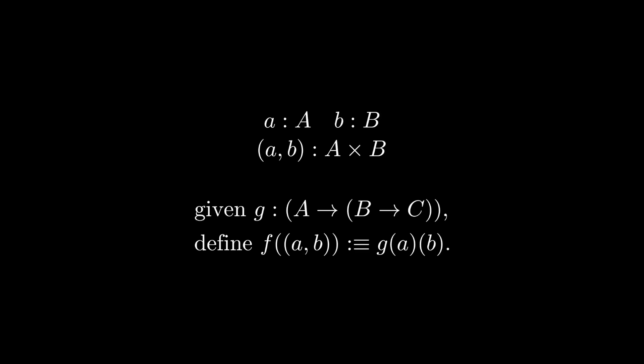Indeed, if we did not make this a constraint, there is no reason to believe that it would suffice to define F only on pairs, for we did not declare, unlike in set theory, that every element in A cross B was of the form little a comma little b.